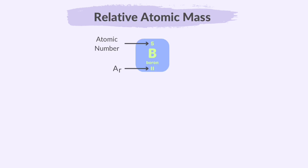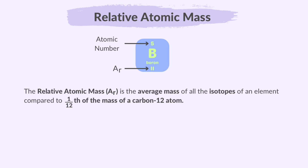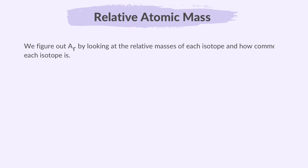The relative atomic mass, symbol Ar, of an element is a number you find on the periodic table, right next to the element's name and the atomic number. The relative atomic mass is the average mass of all the isotopes of an element compared to one-twelfth of the mass of a carbon-12 atom. The fixed mass of a carbon-12 atom is like a standard reference point for comparing the masses of all other atoms. We figure out relative atomic mass by looking at the relative masses and how common each isotope is — that is, its abundance — which helps us understand an element's average atomic mass.